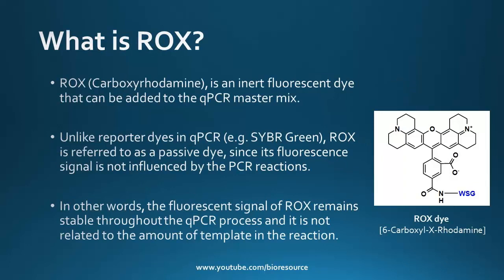ROX is the most commonly used passive reference dye in qPCR, also known as carboxyrhodamine. It is an inert fluorescent dye that can be added to the qPCR master mix. Unlike other reporter dyes such as SYBR Green, ROX is referred to as a passive dye because its fluorescence signal is not influenced by the PCR reaction. Hence, the fluorescent signal of ROX remains stable throughout the qPCR process and is not related to the amount of template in the reaction.